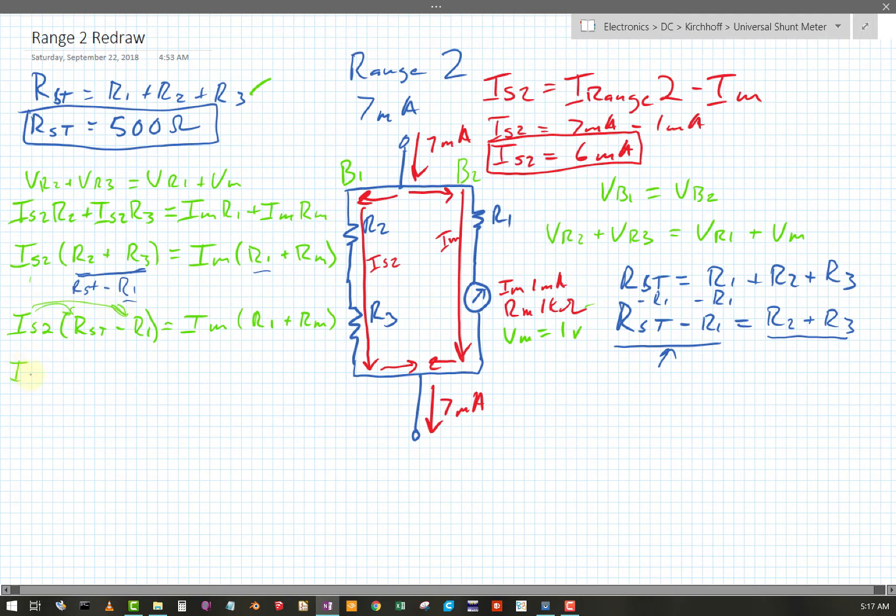Okay, let's find that. So Is2 times Rst minus Is2 times R1 equals I meter times R1, I meter times Rm. Okay, got to get my R1 terms on the same side. So I've got my Is2 times R total minus Is2 times R1. Okay, now we're getting somewhere. So I've got all my R1 terms by themselves.